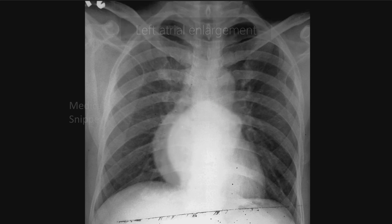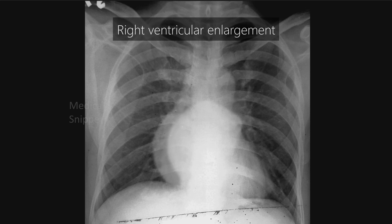In right ventricular enlargement, the cardiac apex is lifted upwards, and it is usually associated with a dilated pulmonary artery.